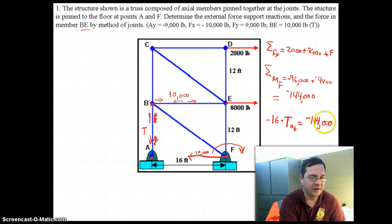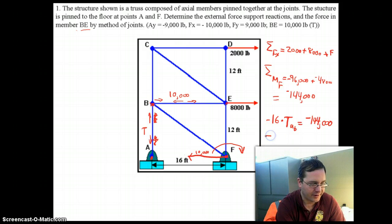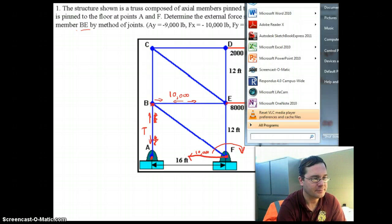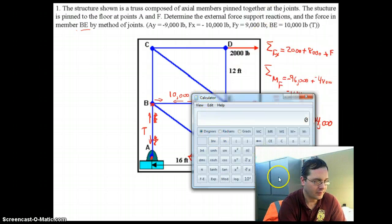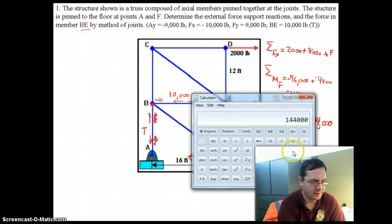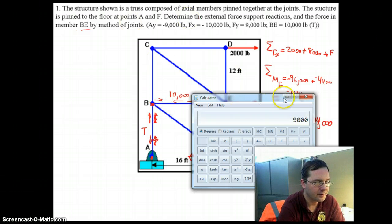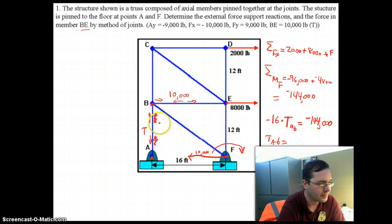So, the question is, how do you get tension AB by itself? You divide both sides by negative 16. And that will tell you the force in pounds that is acting in member AB. So, 144,000 divided by 16. There's 9,000 pounds tension in member AB. So, this is 9,000 pounds.